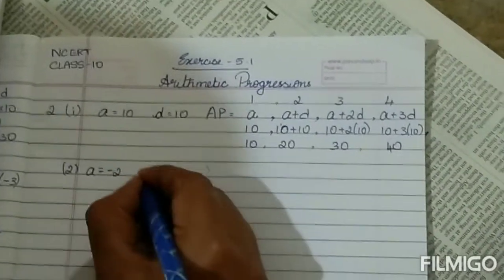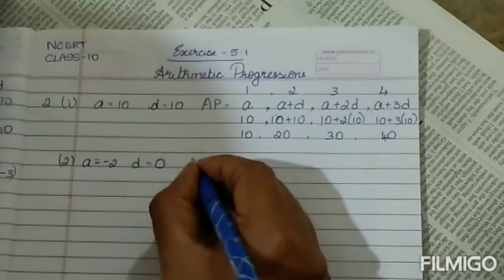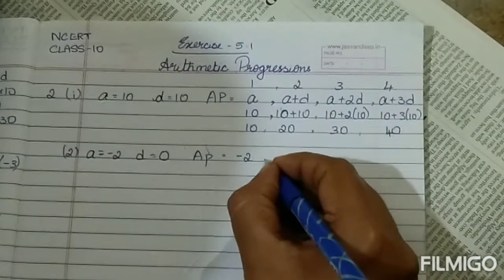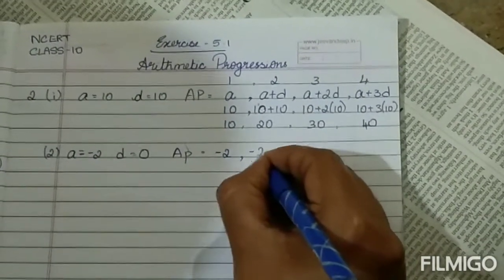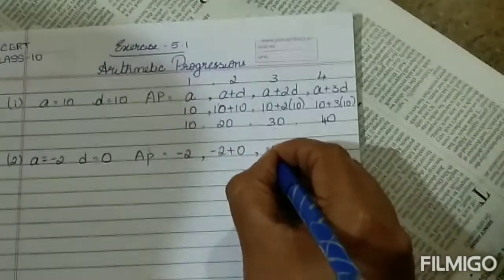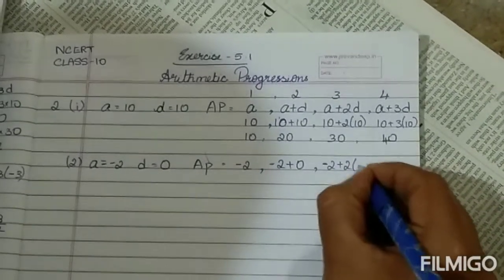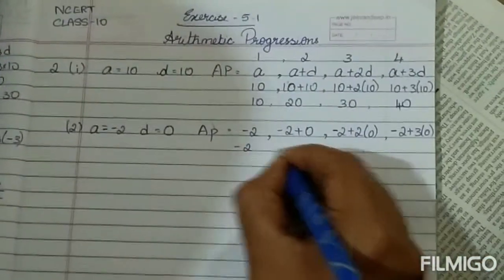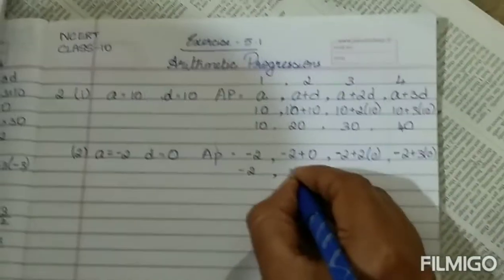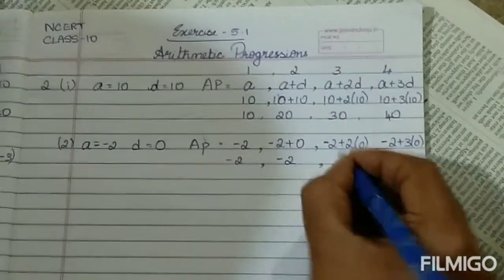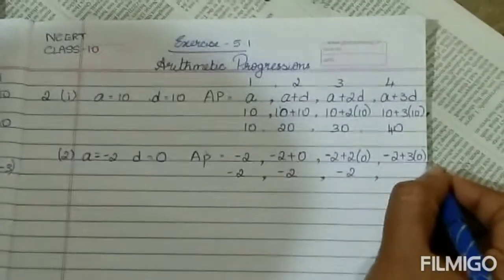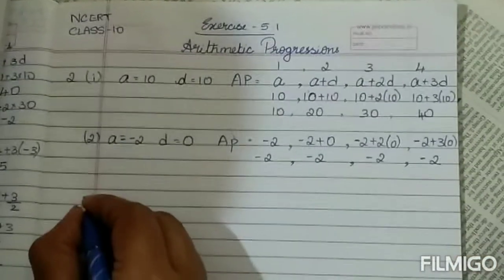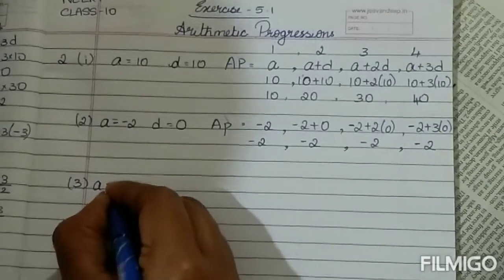term as a equals minus 2 and common difference is 0. You are just going to replace the value in the place of a and common difference: a will be minus 2, minus 2 plus d is 0, minus 2 plus 2 of 0, minus 2 plus 3 of 0. Minus 2, minus 2, 2 into 0 is 0, left is minus 2, 3 times 0, which is very simple even though I am doing it in depth.